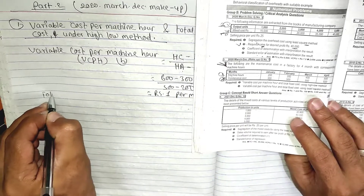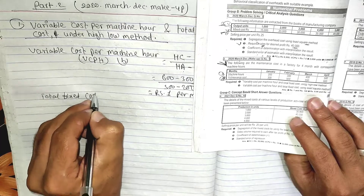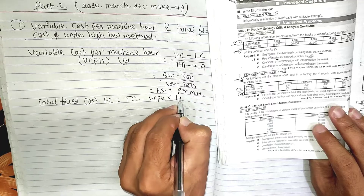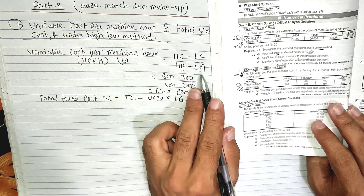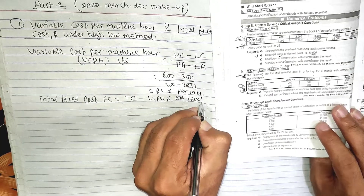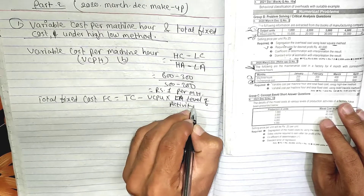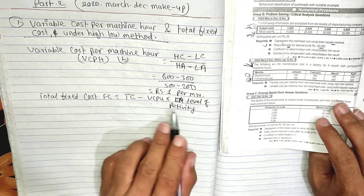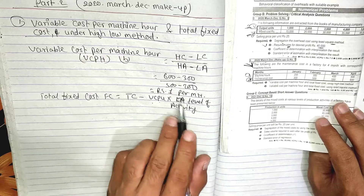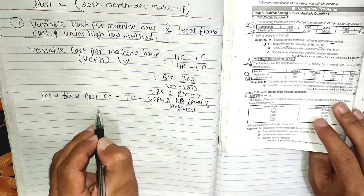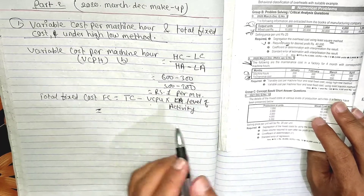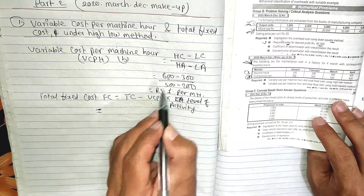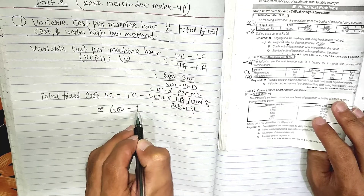If you look at the total fixed cost, you can see the fixed cost formula: FC equals total cost minus BCPU into level of activity. If you look at the high cost, you will see the level of activity and the total cost.